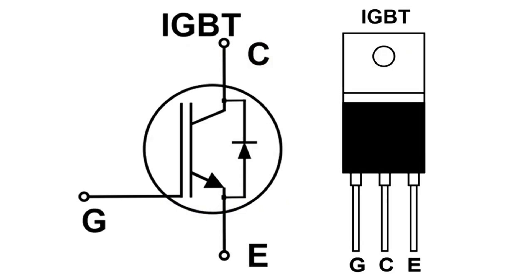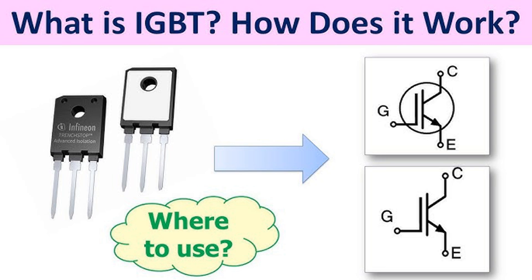Summary — IGBTs are versatile components used in a wide range of power electronics applications where high efficiency, fast switching, and the ability to handle high voltage and current are critical. They are integral to industrial, automotive, renewable energy, transportation, and consumer electronic systems due to their reliability and efficiency in managing and converting electrical power. The IGBT is a powerful and efficient switch that balances the best properties of MOSFETs and BJTs, making it a key component in modern power electronics systems.